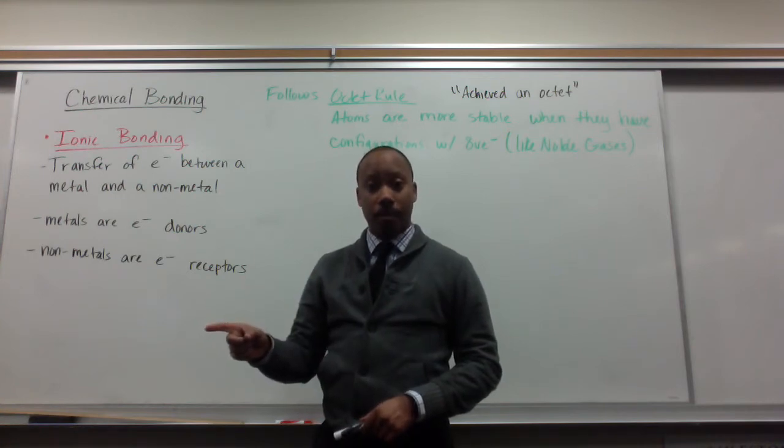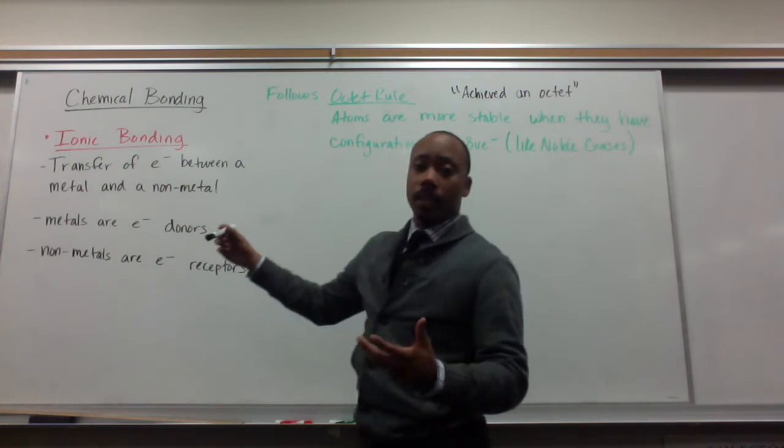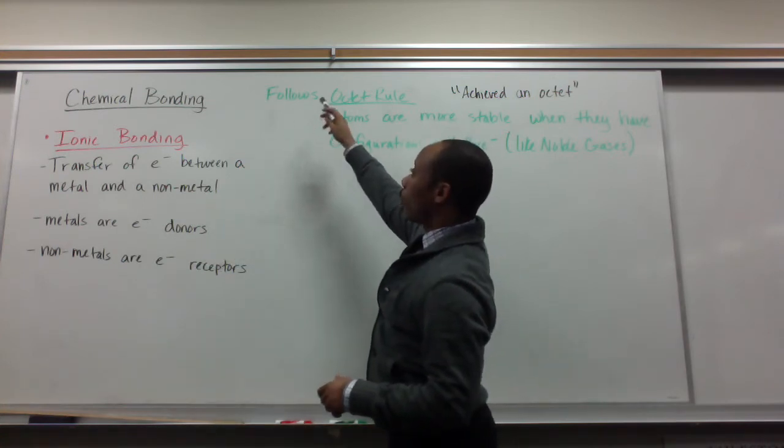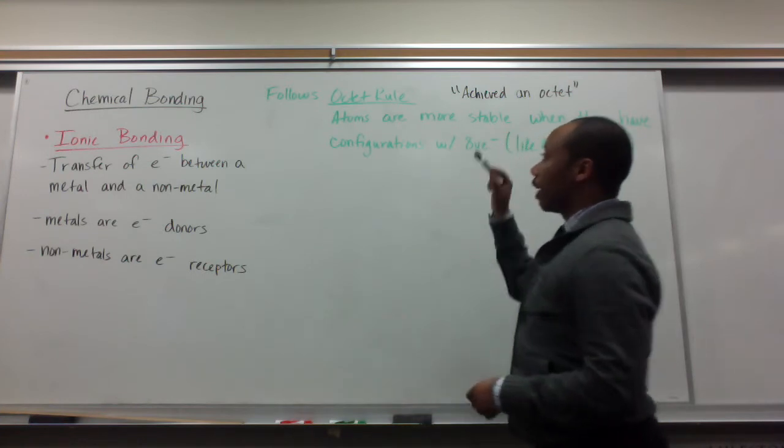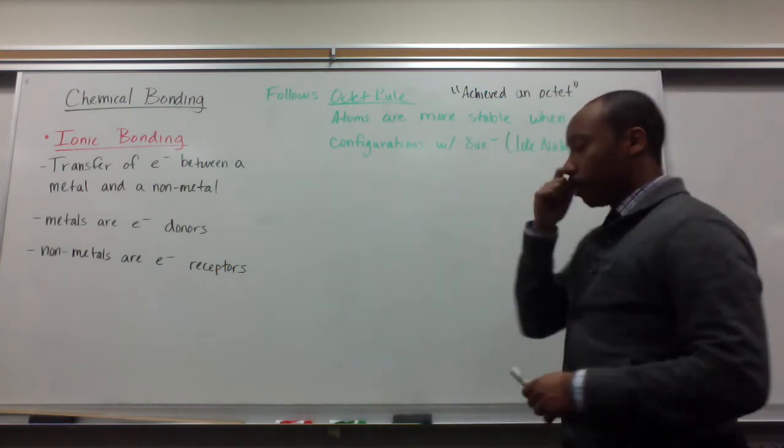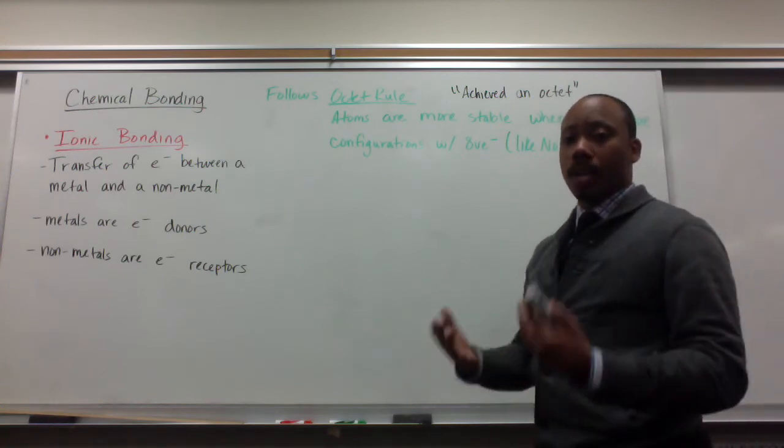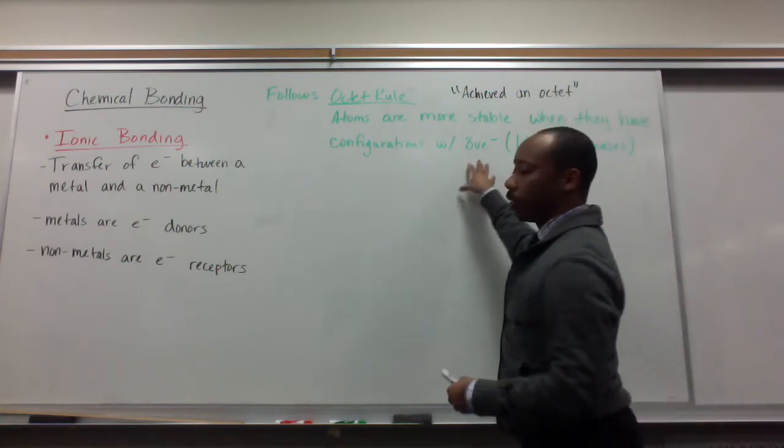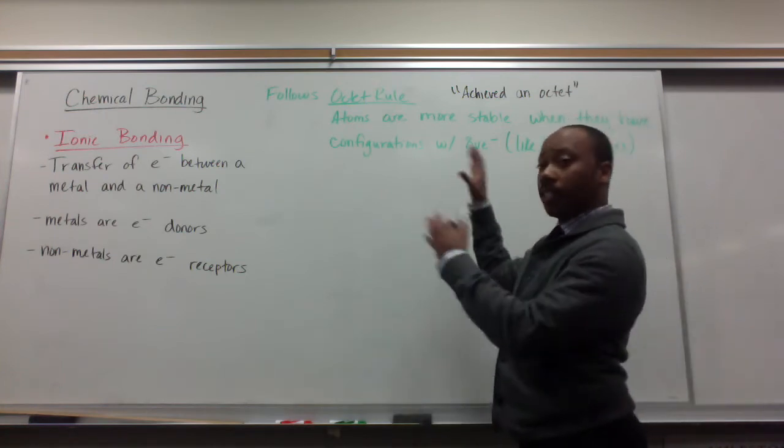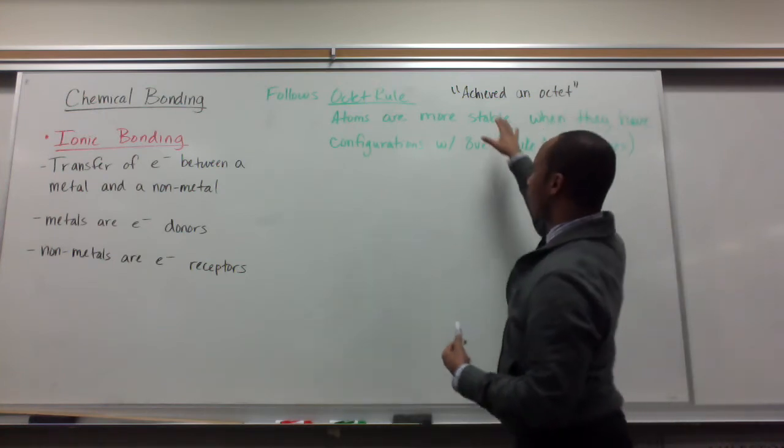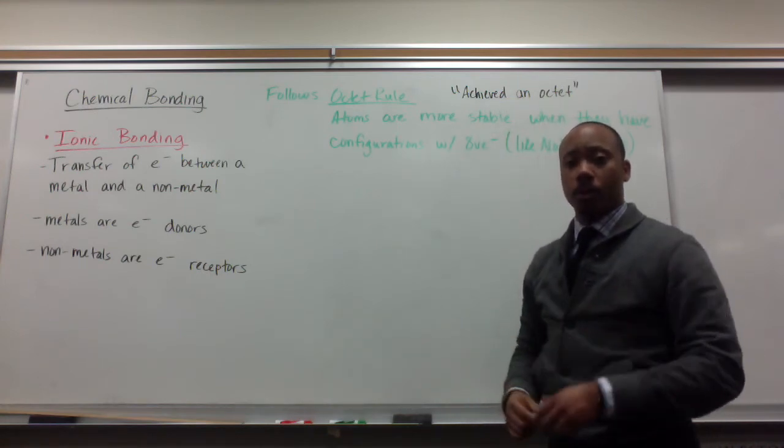Chemical bonding is based on or follows the octet rule, which states that atoms are more stable when they have configurations that resemble that of a noble gas, having eight valence electrons in their outermost energy level. When an atom reaches this state, we say that it has achieved an octet.